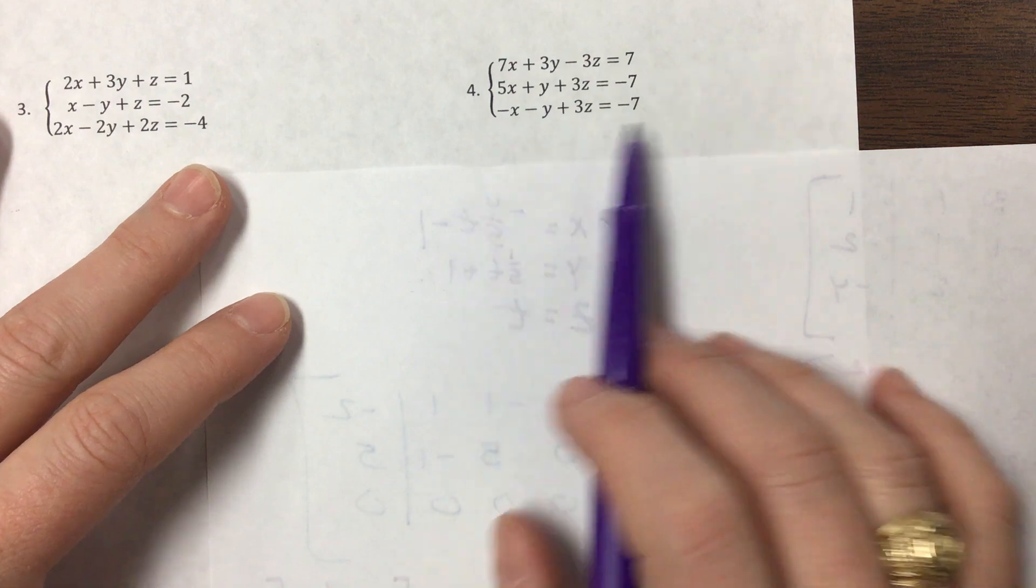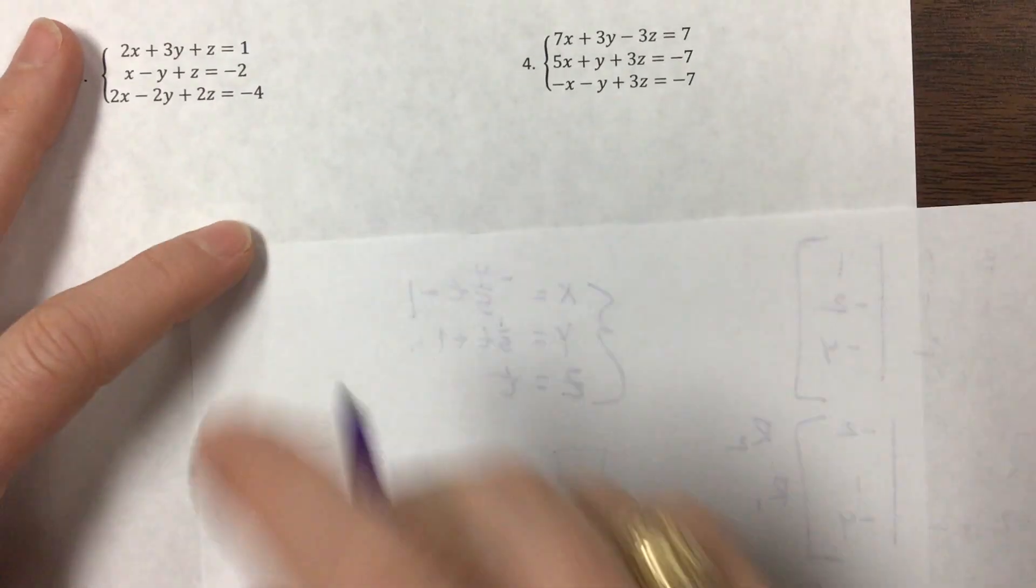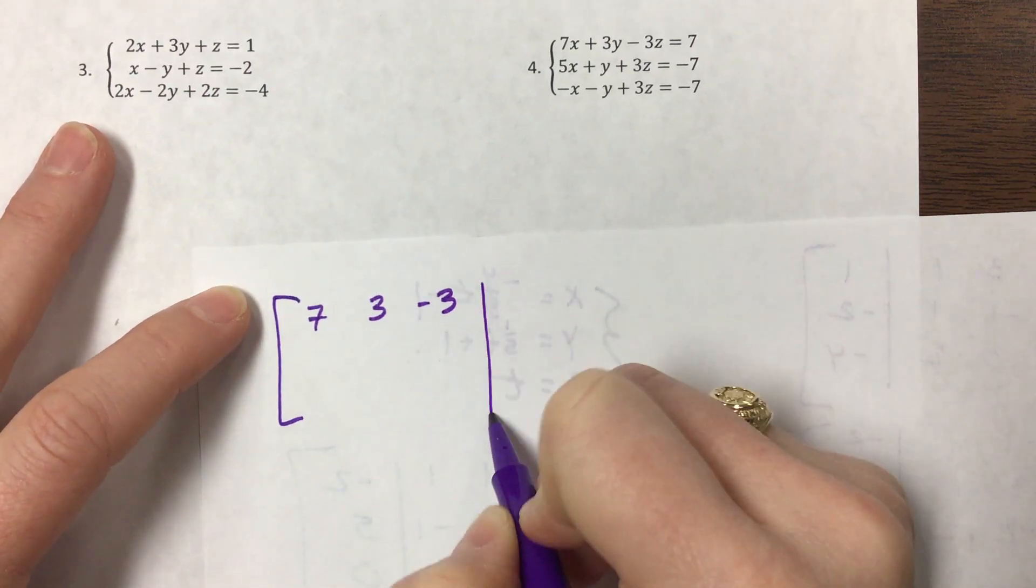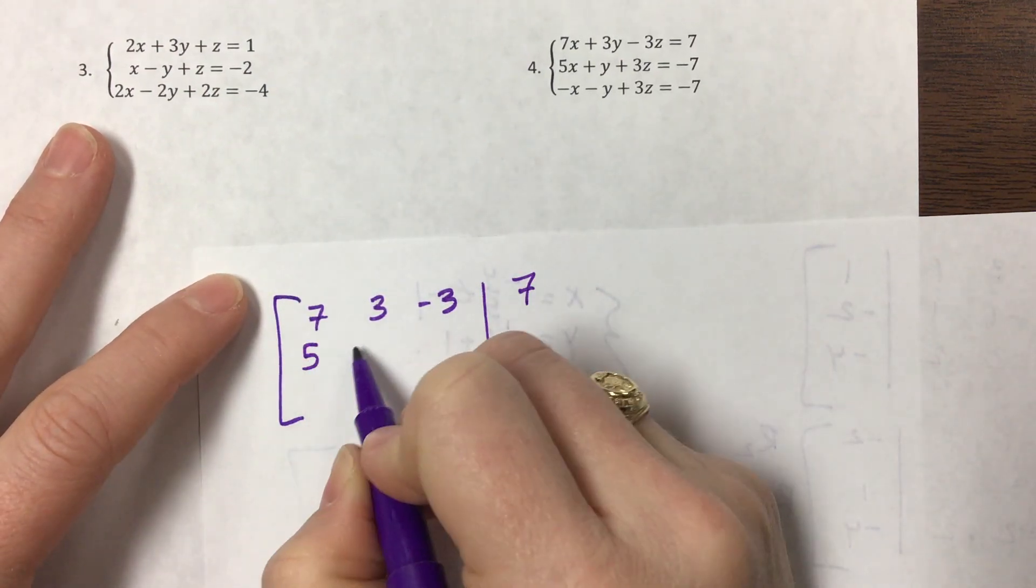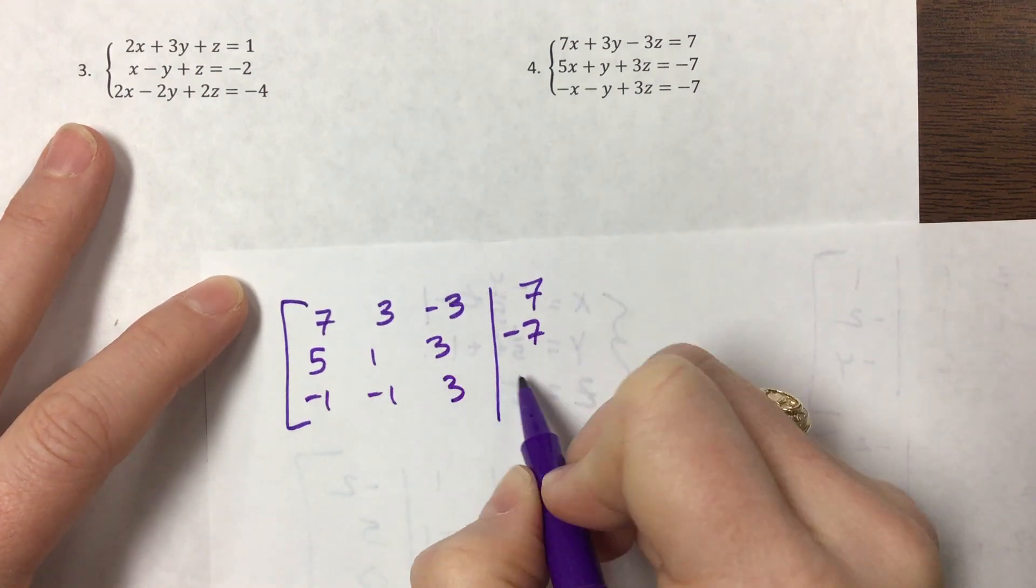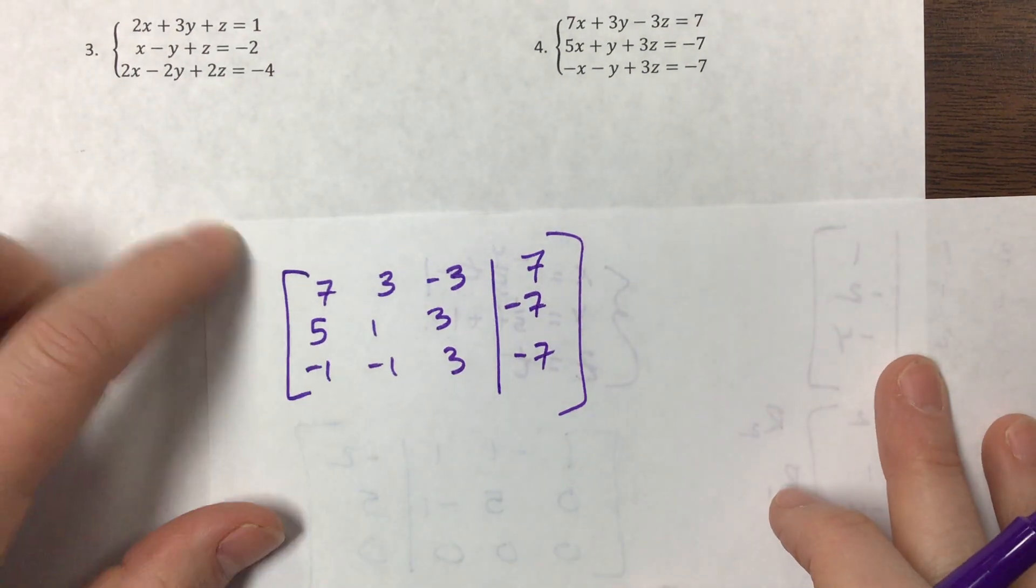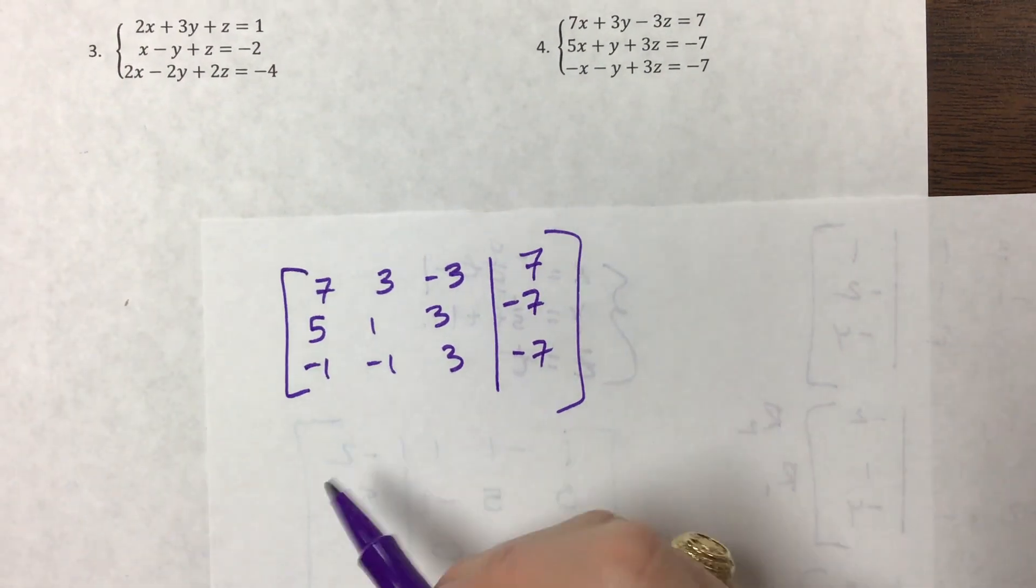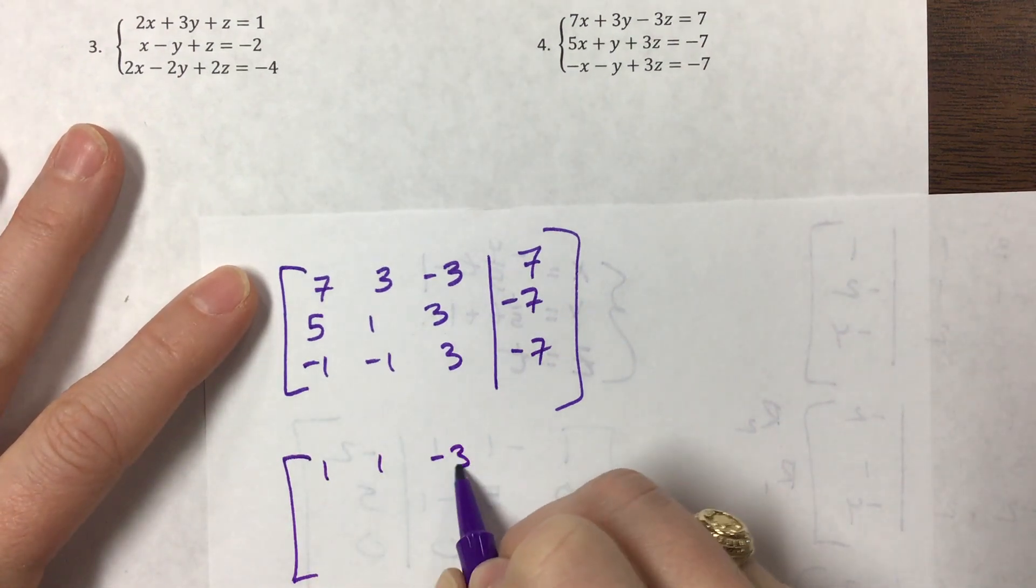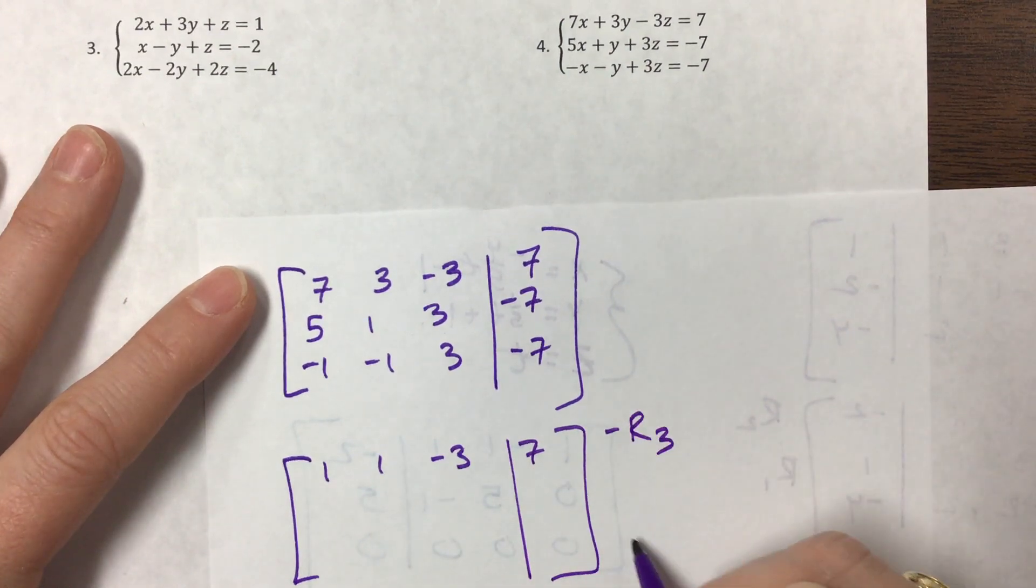Yeah, no, not gonna happen there. So there's not a scalar multiple. Okay, so I see 7, 3, -3, 7, 5, 1, 3, -7, -1, -1, 3, -7. I'm gonna go ahead and put this row on top so that I can multiply by negative one. So 1, 1, -3, 7 becomes that new - this is negative row three, and this row one will move down here.